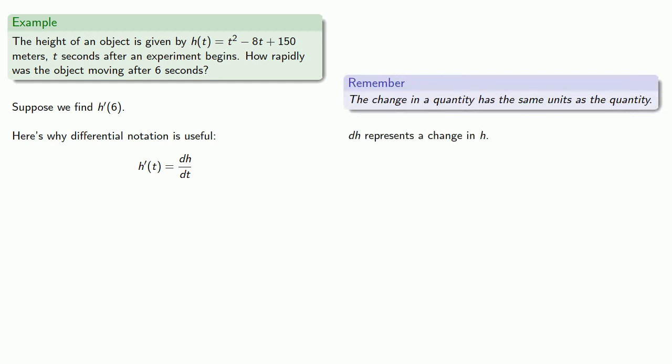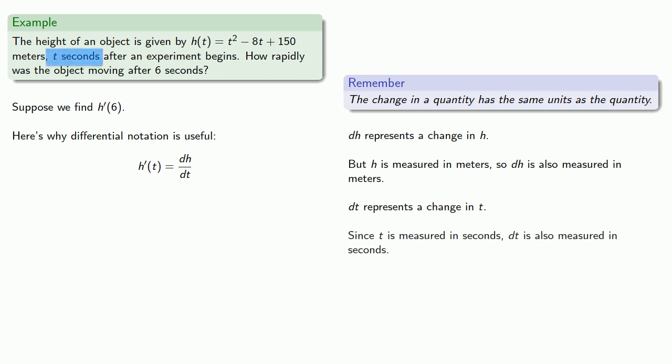So dh represents a change in h, but h is measured in meters, so dh is also measured in meters. dt represents a change in t, our time, and since our time is measured in seconds, dt is also measured in seconds.